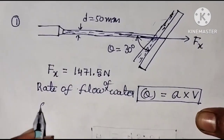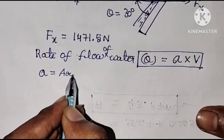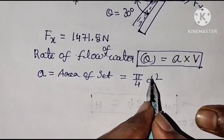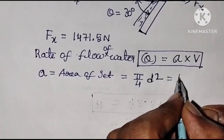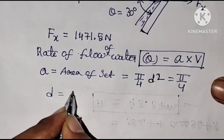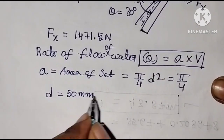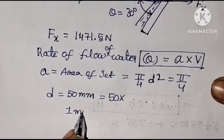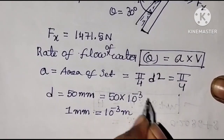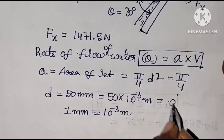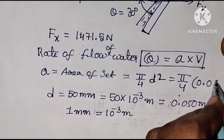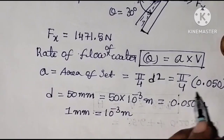First, find the area of the jet. The formula is A = π/4 × d², since the cross-section of the jet is circular. The diameter of the jet is 50 mm. Converting to meters: 50 mm = 50 × 10⁻³ meters = 0.050 meters. So A = π/4 × (0.050)².